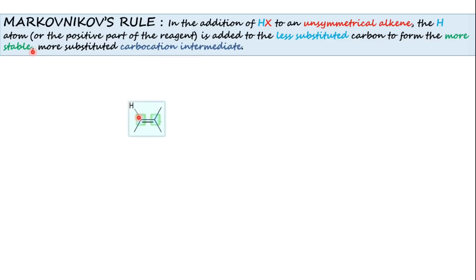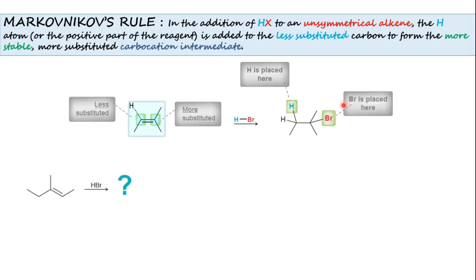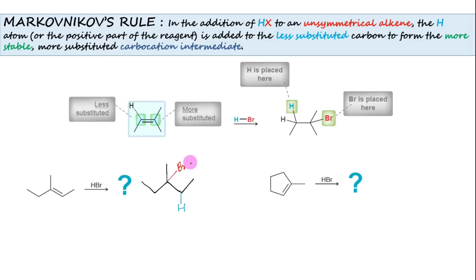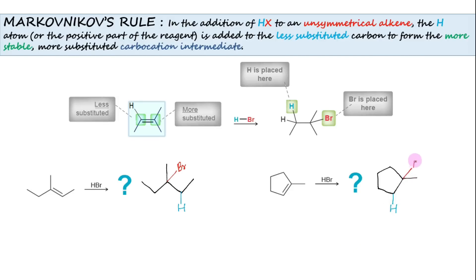Consider this unsymmetrical alkene. This carbon is less substituted whereas this carbon is more substituted. When hydrogen bromide is added, hydrogen will be placed on the less substituted carbon so that bromine will be placed on the more substituted carbon. Taking another unsymmetrical alkene, we can write the product directly by adding hydrogen on the less substituted carbon and bromine on the more substituted carbon. For a cyclic unsymmetrical alkene, we can write the product based on Markovnikov's rule: attach hydrogen on the less substituted carbon and bromine on the more substituted carbon.